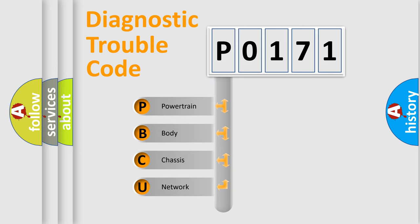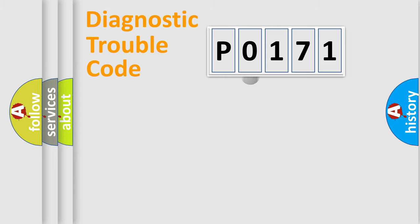We divide the electric system of automobile into four basic units: powertrain, body, chassis, and network. This distribution is defined in the first character code.